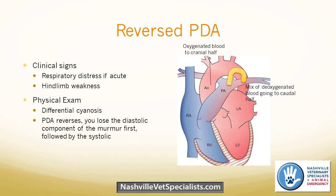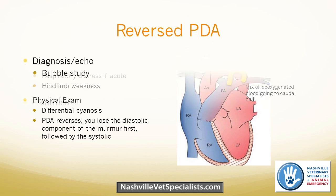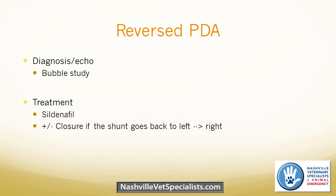On exam with a reverse PDA, you won't hear the continuous murmur. When they reverse, you first lose the diastolic component, and many of these dogs don't have a murmur at all. If an animal previously had a loud murmur and it suddenly disappears, reverse PDA is something to consider. Diagnosis involves a bubble study — agitated saline is injected into a cephalic vein, creating micro-bubbles visible on echo. Normally the bubbles go to the right side of the heart and are filtered by the lungs, with very few returning to the left heart.